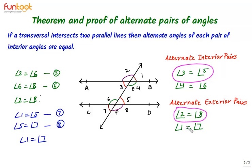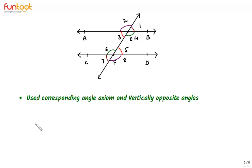So when two parallel lines are intersected by a transversal, we have 2 pairs of alternate interior angles that are equal and 2 pairs of alternate exterior angles that are equal. To summarise, in this proof we used the corresponding angle axiom and vertically opposite angles to prove the theorem that pairs of alternate angles are equal.